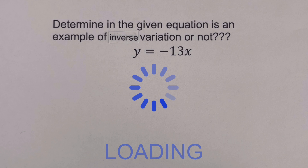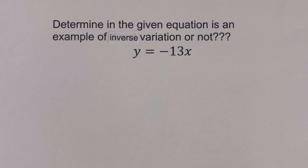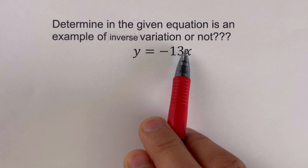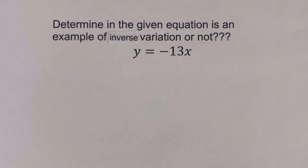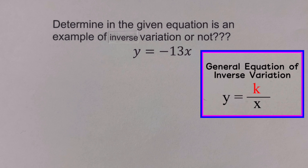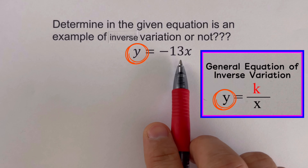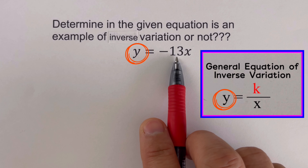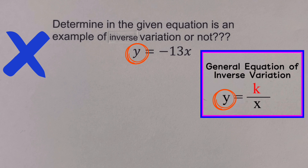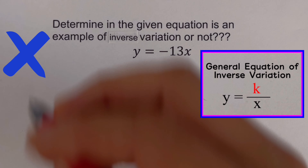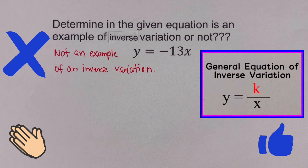Now let's move on to the next example. I would encourage you to pause this video and try this problem on your own, then check your answer. The problem: determine if y equals negative 13x is an example of an inverse variation or not. We remember that the general equation for an inverse variation is y equals k over x. In this equation, y is isolated by itself. However, x is not in the denominator of negative 13 — it is being multiplied. That tells us this is not an example of an inverse variation.